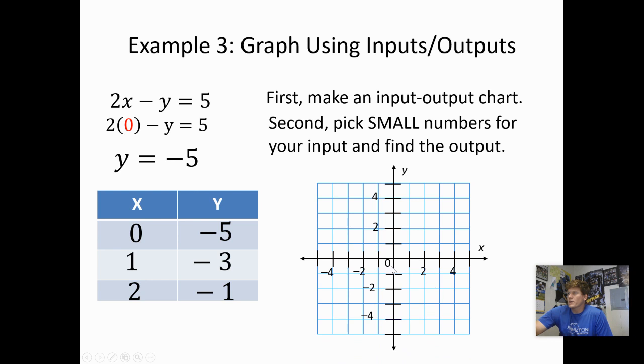So there's my input-output table. I can put that together on my coordinate plane. 0, negative 5. 1, negative 3. And then 2, negative 1. Once I have my points, connect them. And my graph is done.